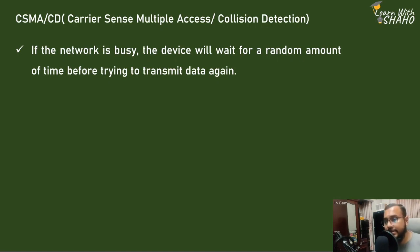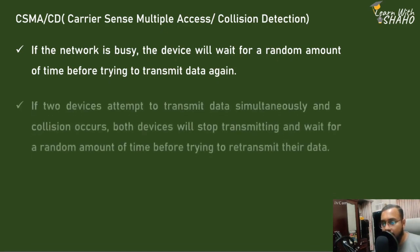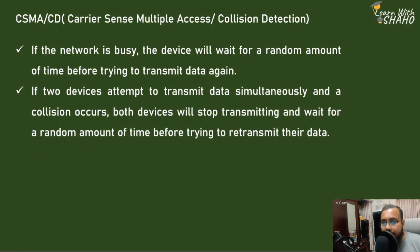Every sender that wants to communicate — suppose there is a collision scenario — in that case the device will wait for a random amount of time. Both devices will wait a random amount of time and then try to transfer again. If two devices attempt to transmit data simultaneously and a collision occurs, both devices will stop transmitting and wait for a random amount of time before trying to retransmit their data.